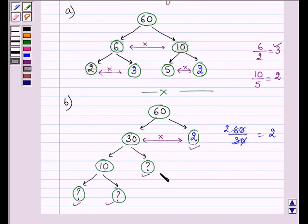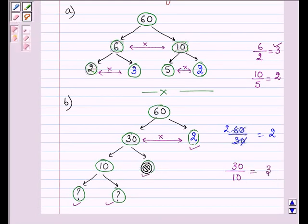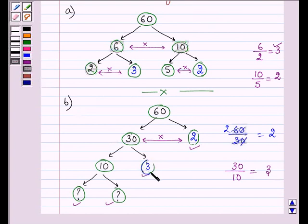Proceeding on with the next one. 30 should get divided by 10 so as to find the missing number and that comes out to be 3. So this blank will be filled up by a number that is 3.